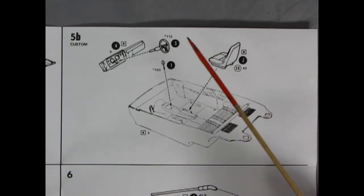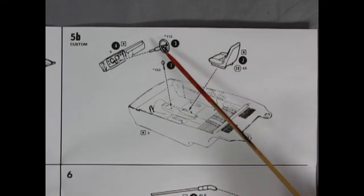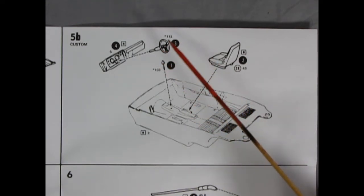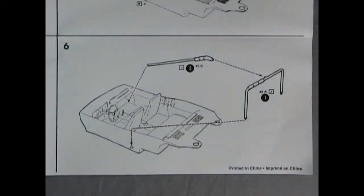Image 5b shows our custom interior going together with alternate bucket seats going into the tub with our shift lever as well as our chrome plated steering wheel this time around and our dashboard. And to continue our custom interior step six shows our two-piece roll bar being glued into place.